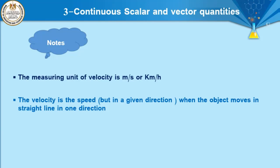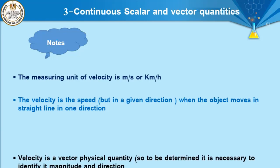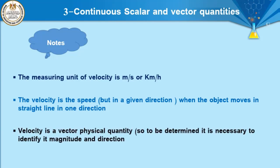It is a very important point: when does velocity equal speed? When the object moves in a straight line. The velocity is a vector physical quantity, so it can be identified by its magnitude and a specific direction.